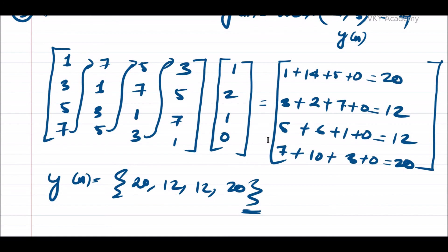To summarize the methods: if the question is 2 marks, use circular convolution via linear convolution. For 8 to 16 marks, use the graphical or concentric circle method. For 5 to 8 marks, use the matrix method. If a specific method is asked for, use that method. One more important method is the DFT and IDFT method, which typically comes in semester exams for 10 or 16 marks and will be discussed in the upcoming lecture.